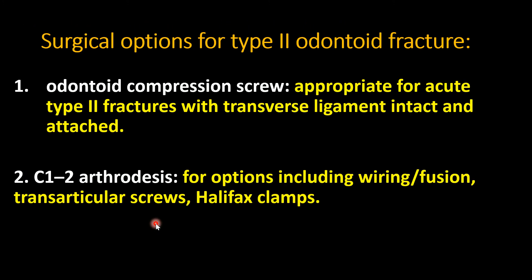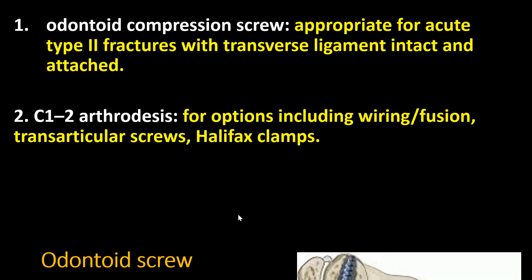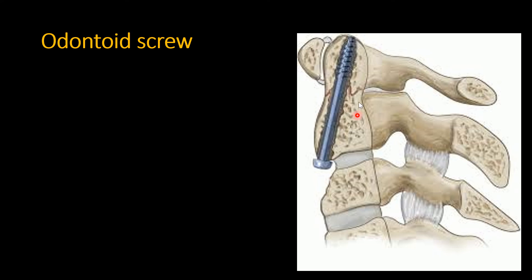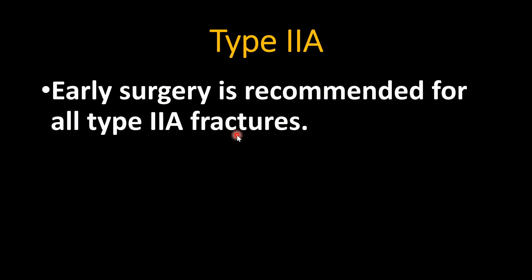Surgical options for Type 2 odontoid fracture: odontoid compression screw fixation is appropriate for acute Type 2 fractures with intact transverse ligament and no significant displacement. C1-C2 arthrodesis options include wiring fusion, transarticular screws, and Halifax clamps. The odontoid screw will be discussed in a separate lecture. For Type 2a, consider early surgery.